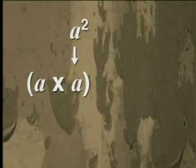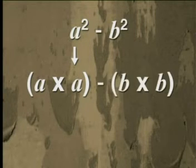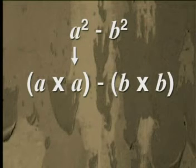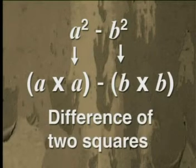To begin this lesson we will look at what we mean by the difference of two squares. Look at a squared — it is a perfect square, it is a times a. And b squared is a perfect square, it is b times b. If we have a squared minus b squared, the minus sign implies a difference between the two terms. So a squared minus b squared is called the difference of two squares.